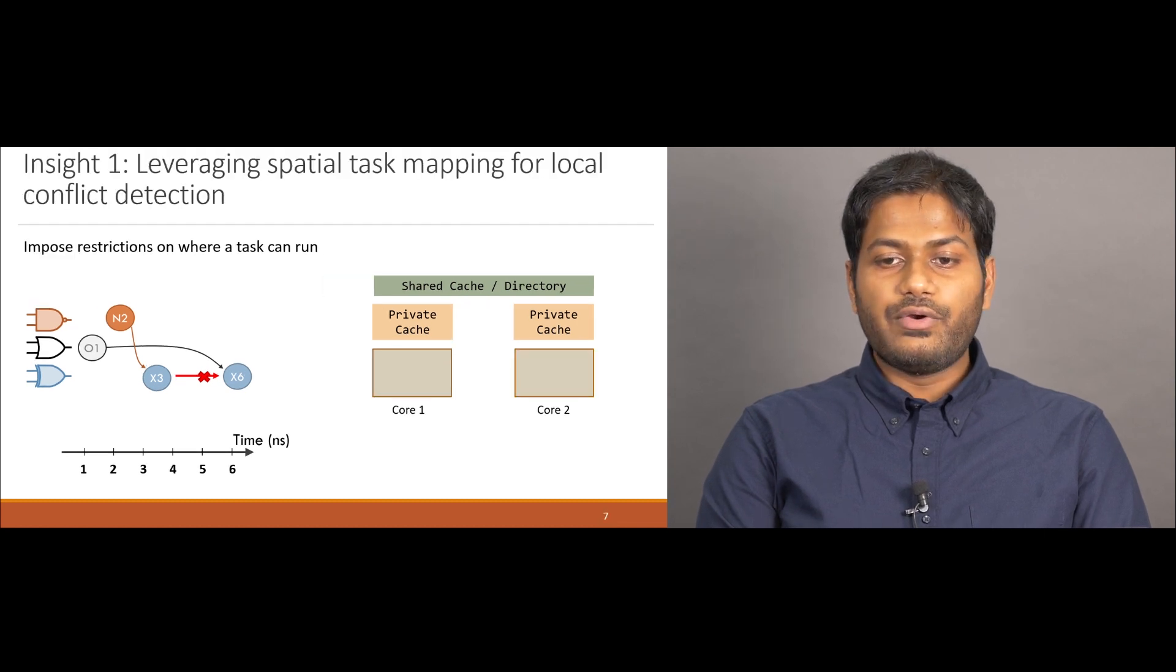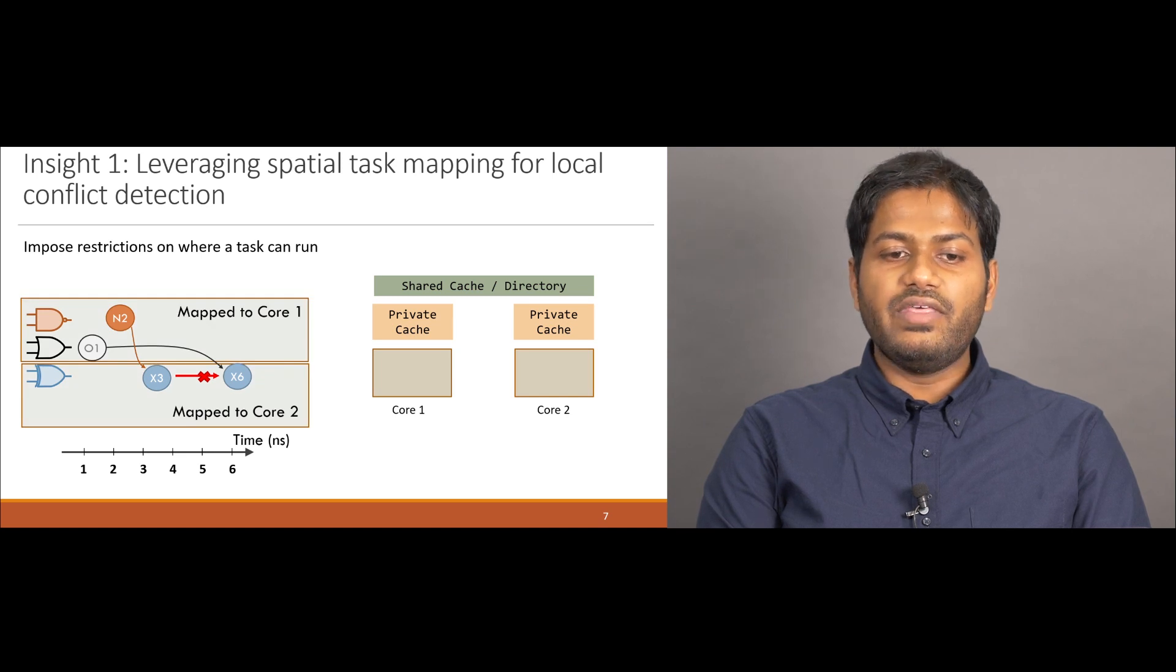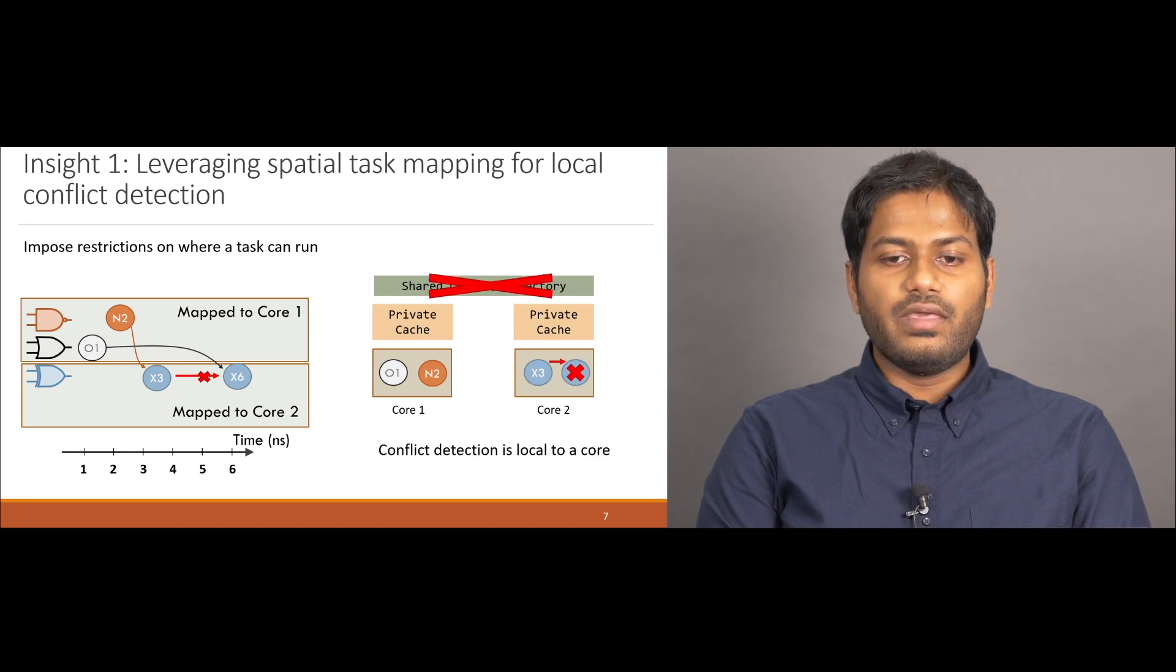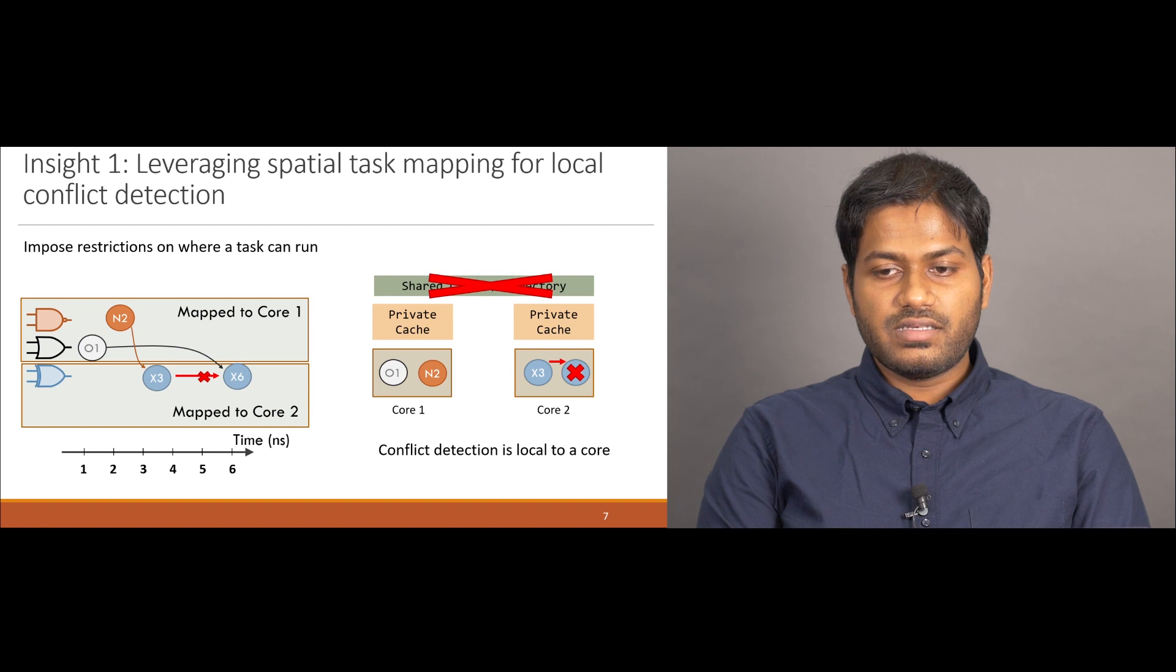In contrast, we remove the requirement for global conflict detection by mapping same object tasks to the same core. For example, if the OR and NAND gates are mapped to core 1 and the XOR gate is mapped to core 2, all accesses as well as conflicts will be local to a core, making the directory redundant. Now, it may seem like this scheme only works if tasks accesses a single object. Next, we will look at an example of how we can leverage order to extend this scheme to tasks that access multiple objects.